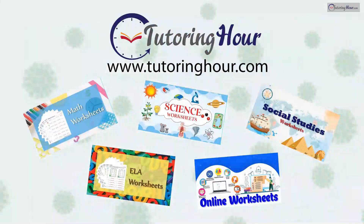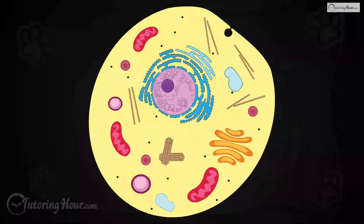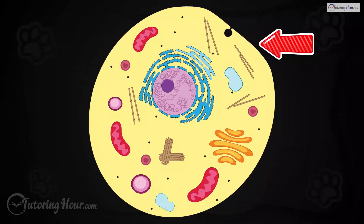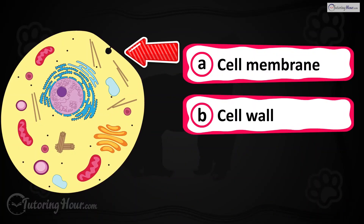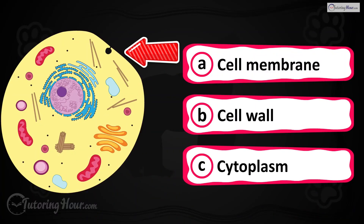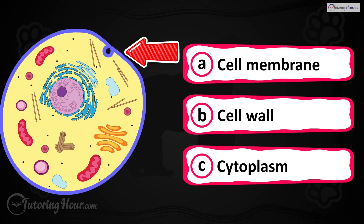Let us get started. Can you identify the highlighted part of the cell? Is it A) cell membrane, B) cell wall, or C) cytoplasm?